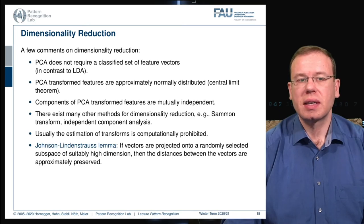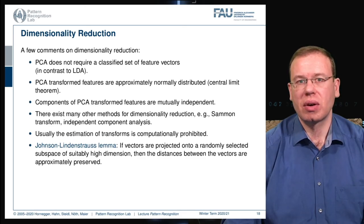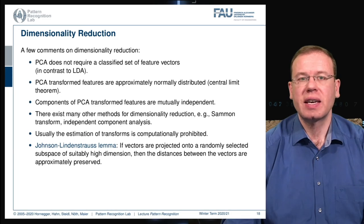The Johnson-Lindenstrauss lemma tells us if vectors are projected onto a randomly selected subspace of suitably high dimension, then the distances between the vectors are approximately preserved. This is also something that is quite commonly being used, the projection onto random subspaces.